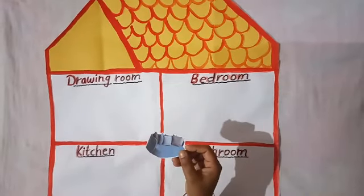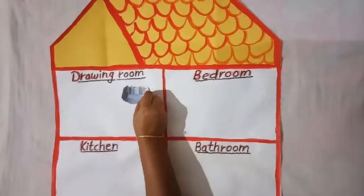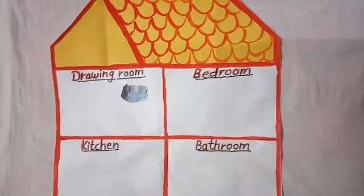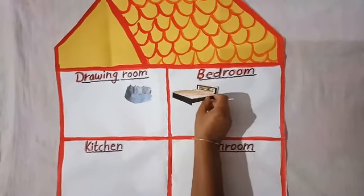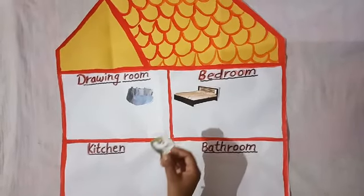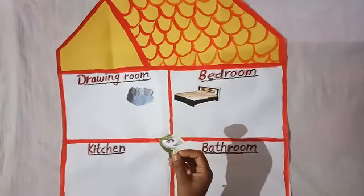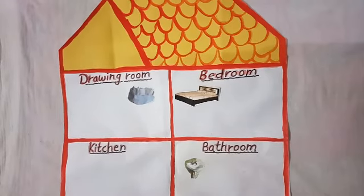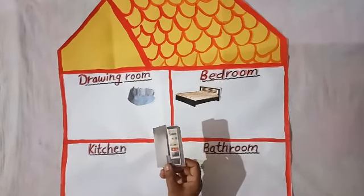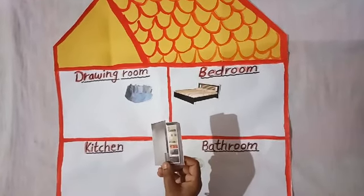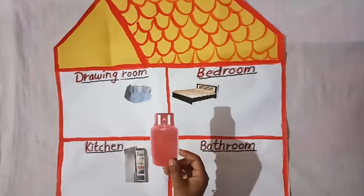This is a sofa. Where does the sofa go? In the kitchen? No, no, no! In the drawing room. Good job. This is a bat. The bat is in the bedroom. What is this, children? This is a sink. The sink is in the bathroom. What is this? This is a fridge. The fridge is in the kitchen.